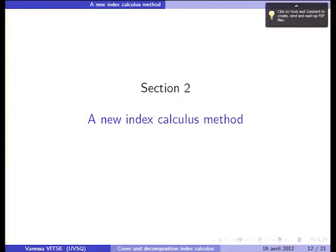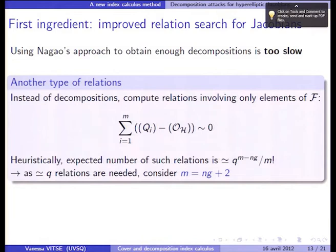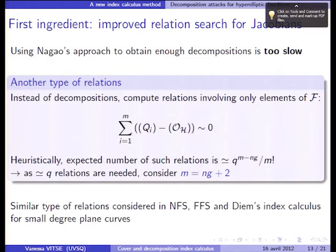In the second part of the talk, I present our new index calculus method. The first ingredient is to improve the relation search. We consider relations involving only elements of the factor base. Making a heuristic count, there are about Q^(M - N_G) / M! such relations, so we fix the parameter M to N_G + 2 to have enough relations for the linear algebra step. This is similar to classical index calculus in finite fields using the number field sieve or function field sieve, or Diem's index calculus for small degree plane curves.